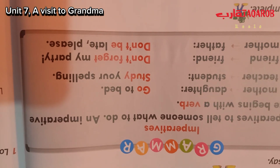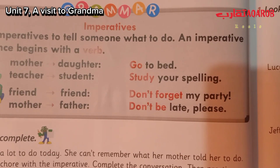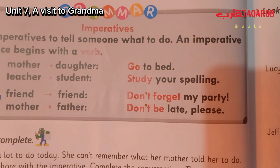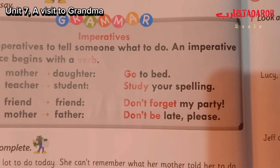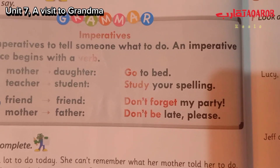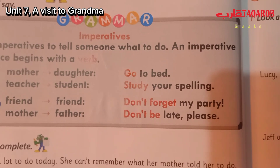Here the imperative verb is 'go,' so we start the imperative sentence with a verb. The second one is 'Study your spelling.' We start the sentence with 'study.' And we start the negative form of the imperative sentence with 'don't' — don't plus the verb. For example, 'Don't forget my party.'